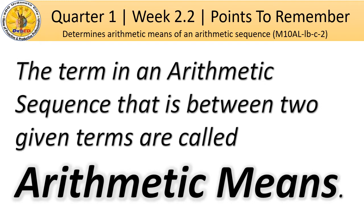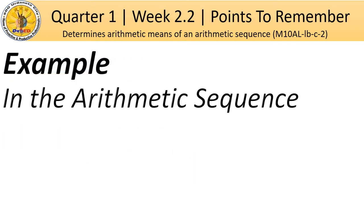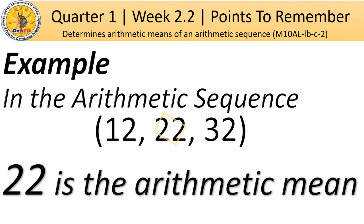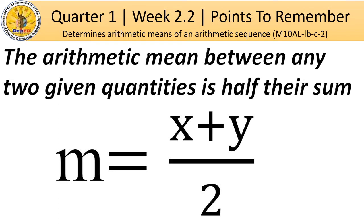The terms in an arithmetic sequence that are between two given terms are called arithmetic means. When given three quantities in an arithmetic progression, the middle one is known as the arithmetic mean of the other two. For example, in the arithmetic sequence 12, 22, and 32, 22 is the arithmetic mean between 12 and 32. The arithmetic mean between any two given quantities is half their sum, so we use the formula m = (x + y) / 2, where m is the arithmetic mean, x is the first term, and y is the last term. Note that we can only use this formula if there is only one missing term in the middle.